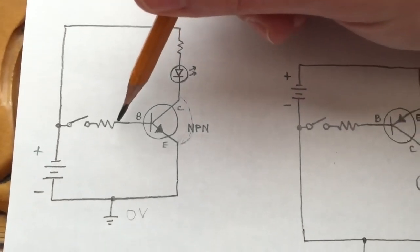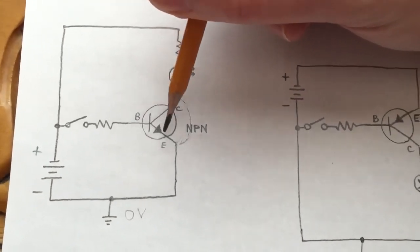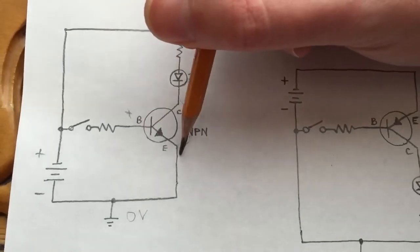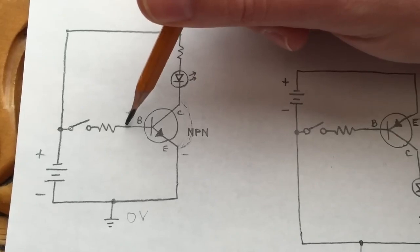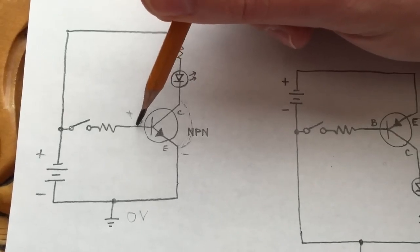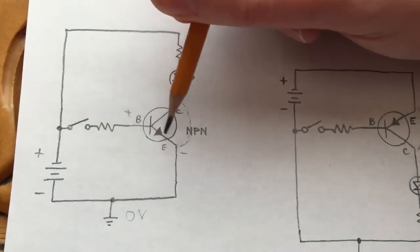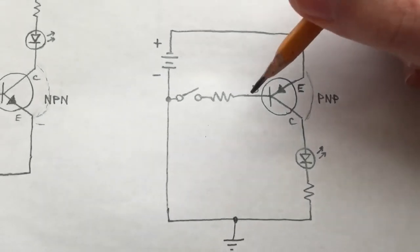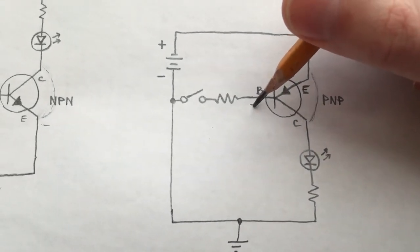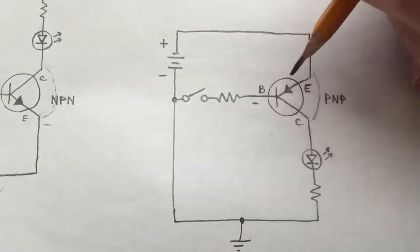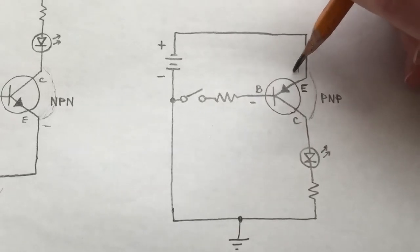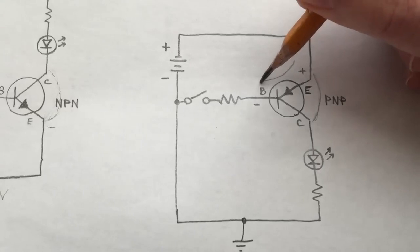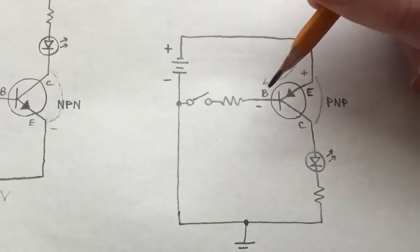In an NPN, current flows into the base — we use a positive voltage relative to a negative voltage at the emitter to cause current to flow from base to emitter and turn the transistor on. In a PNP transistor, we use a negative voltage at the base relative to a positive voltage at the emitter, and current flows in the opposite direction to turn the transistor on.